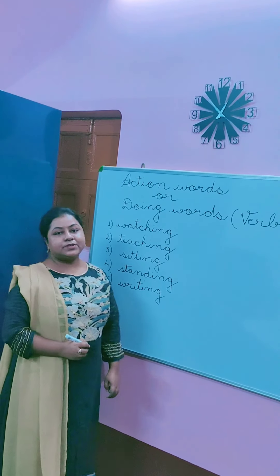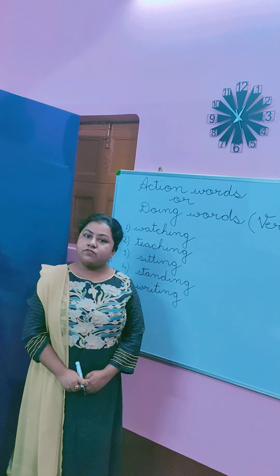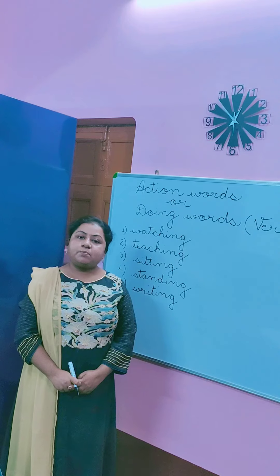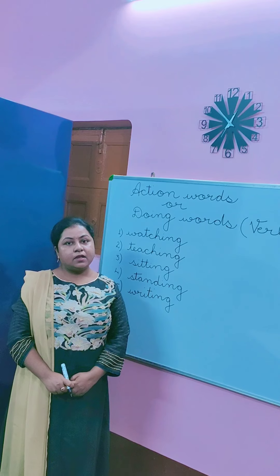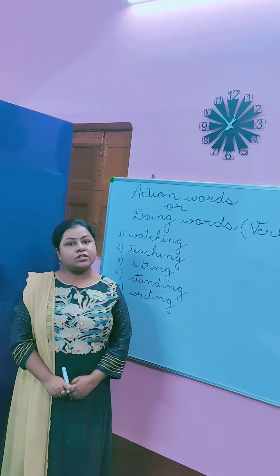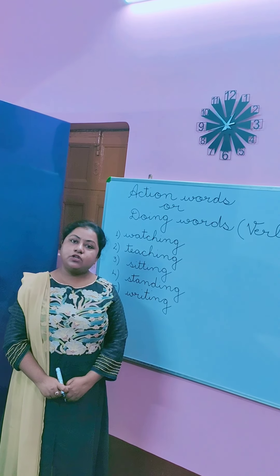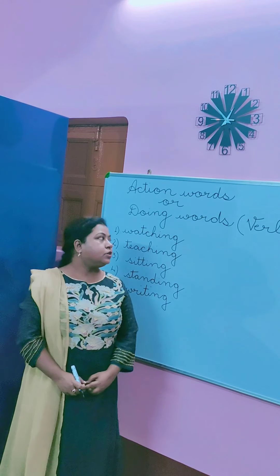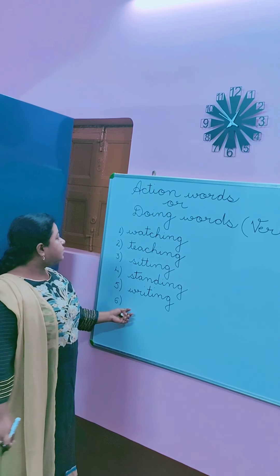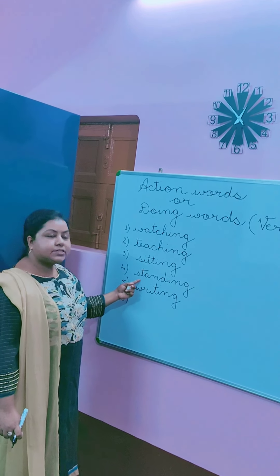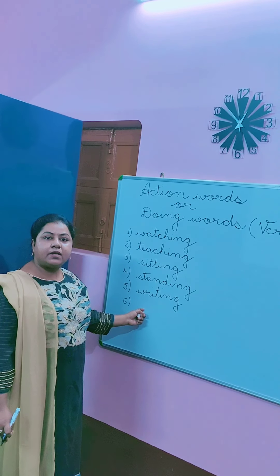So children, action words or doing words are the words which tell what a person, animal, or thing does. Whatever a person, animal, or thing does, we call it action words or doing words. So watching, teaching, sitting, standing, and writing — these actions are performed by a person.